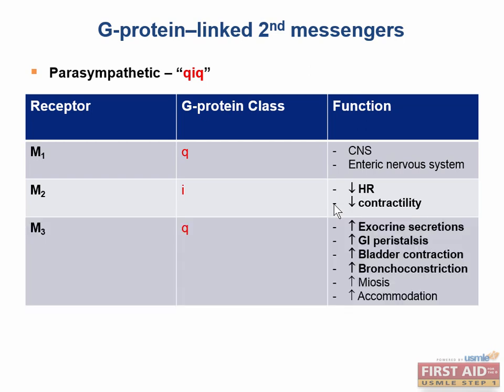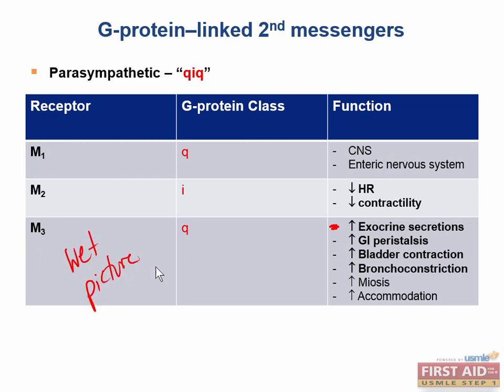The M3 receptor is of the G-sub-Q class, and it increases smooth muscle contraction, such as gut peristalsis, bladder contraction, bronchoconstriction, pupillary sphincter muscle contraction (miosis), and ciliary muscle contraction (accommodation). It also increases exocrine gland secretions such as tears and gastric acid. Activating the M3 receptor will lead to a wet picture because of all these secretions.